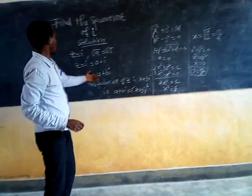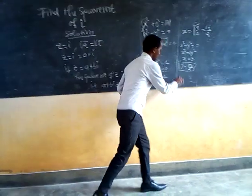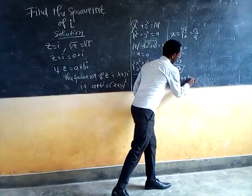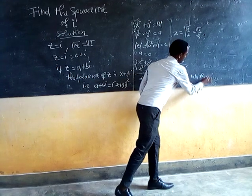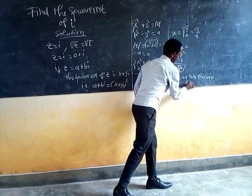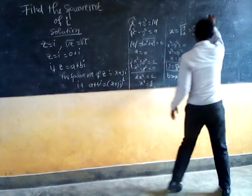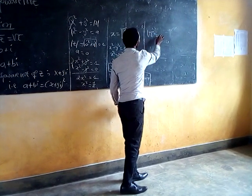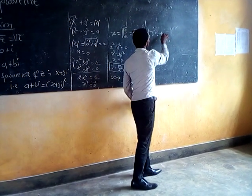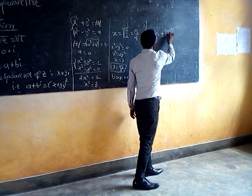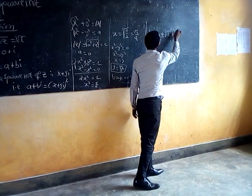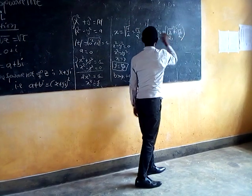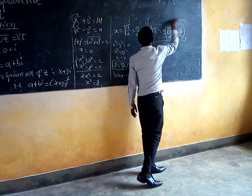To find the solution, since b equals 1 (positive), we take the positive sign. We conclude that the square root of i equals square root of 2 over 2 plus i times square root of 2 over 2. This is the solution of the equation.